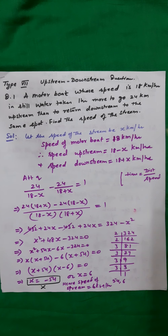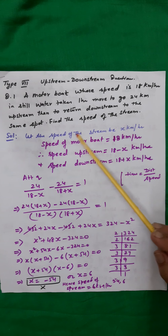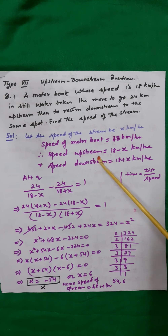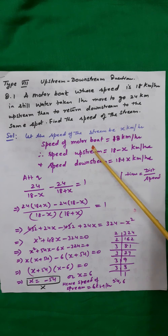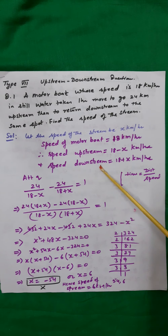Here I would like to state a few things. Whenever we have this kind of question, make sure that the speed of the motorboat is always greater than the speed of the stream. Then only, when you are going upstream, the speed of the stream will be subtracted from the speed of the motorboat. And when you are going downstream, both the speeds will be added up. So speed downstream will be speed of the motorboat plus the speed of the stream.